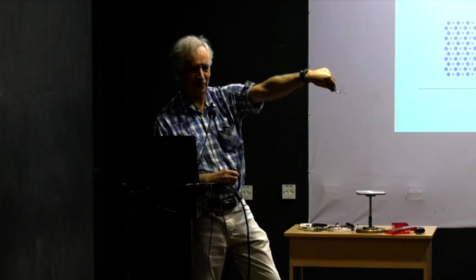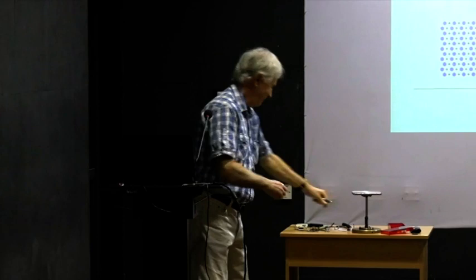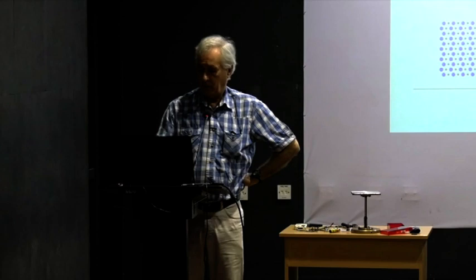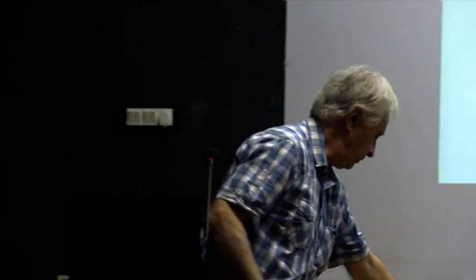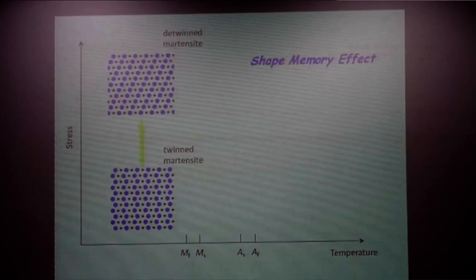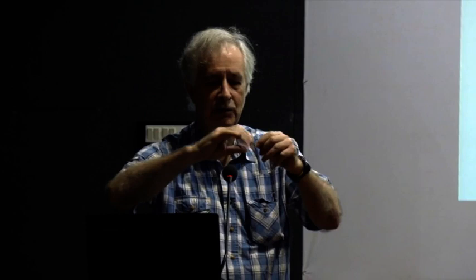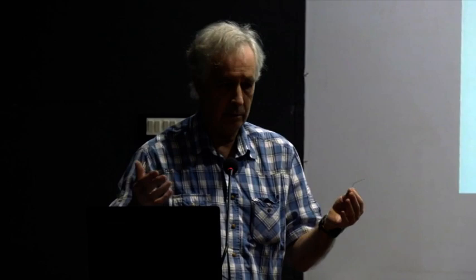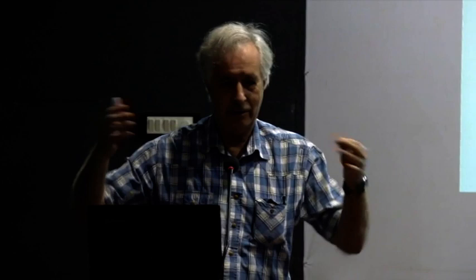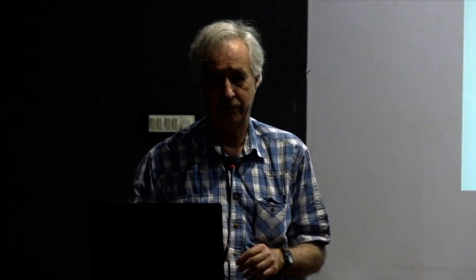When we're deforming the martensite in the cold state, what we're doing is going from the twinned martensite state to the detwinned martensite state — moving around twin boundaries. They're very easy to move. Bending this is not really bending it — it's moving around twin boundaries. It's not a deformation. Deforming means you're introducing irregularities: slips, vacancies, dislocations. This is not a deformation in that sense at all.